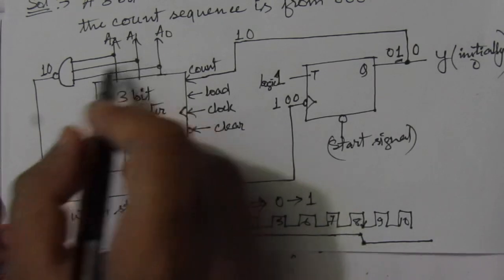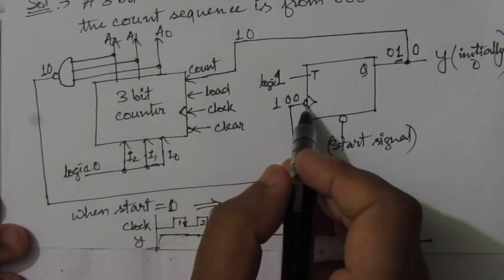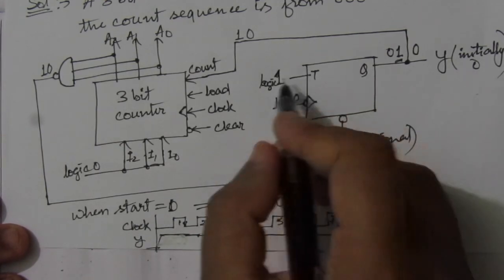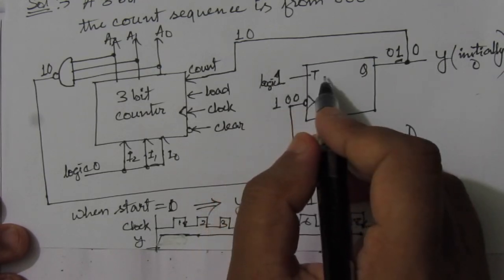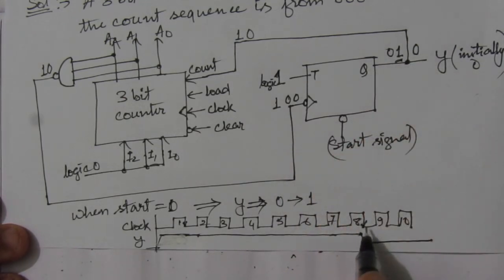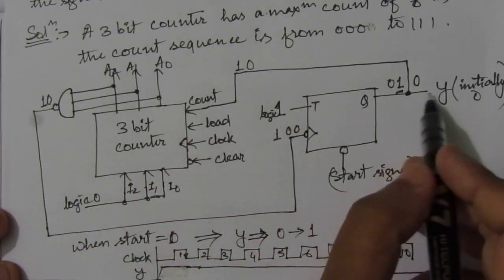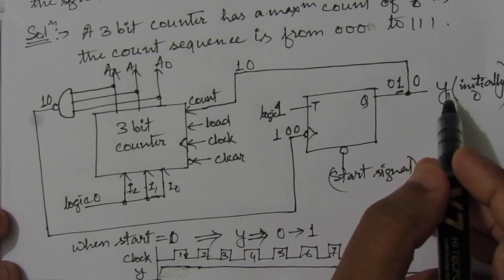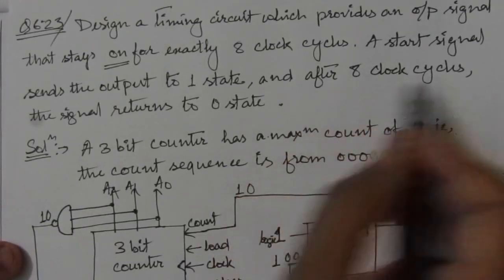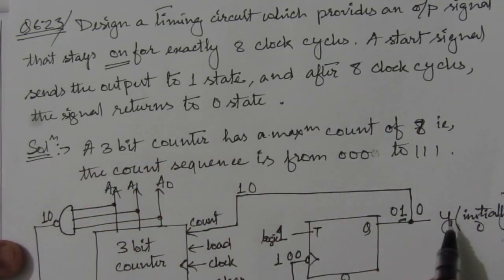Whenever we have 1, 1, 1, the NAND gate output will be 0, giving an active-low signal. The T flip-flop will be activated, and with logic 1 at the T input, the previous output will be complemented and go to 0. So after 8 clock cycles, Y will go to 0 and remain in that state. As stated in the question, after 8 clock cycles the signal returns to 0, meaning the output goes to 0 again.